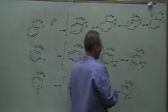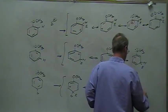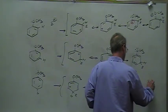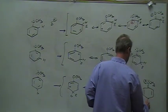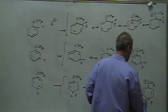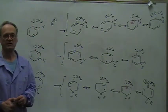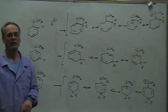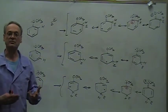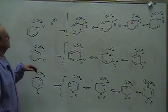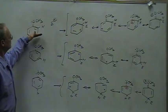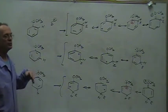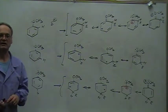That fourth resonance structure is a particularly good one because the octet rule is satisfied for everything in it, whereas it isn't in any of the other resonance structures drawn so far. In the meta case, the positive charge is never next to the oxygen, so you can't bring the lone pair down to place the positive charge on oxygen. So not only can you draw more resonance structures for ortho and para attack, but the fourth one is an even better resonance structure — strongly indicating that ortho-para attack will occur rather than meta attack. That's why groups with lone pairs next to the benzene ring are ortho-para directors.